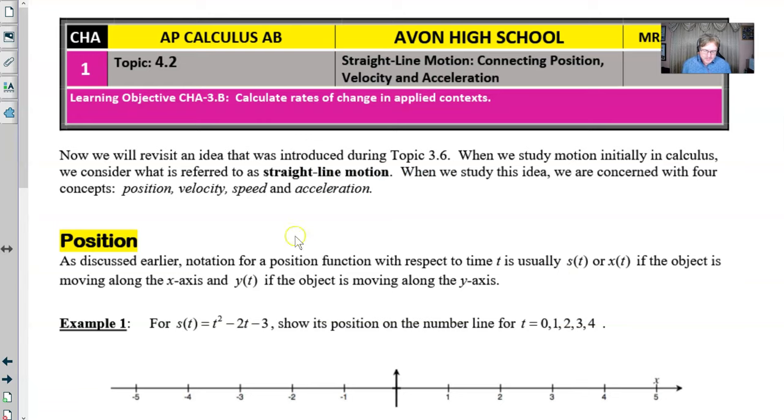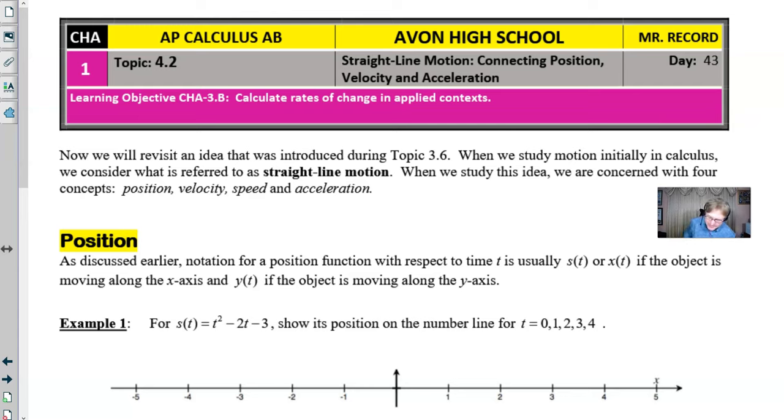According to my notes here, especially if you're a student at Avon High School, we're going to revisit an idea that we originally started to talk about at the very end of the last unit. When we study motion initially in calculus we consider straight line motion, and we end up being very concerned with four concepts: position, velocity, speed, which is kind of a new one here, and then acceleration. Those four things really set the foundation for particle motion.